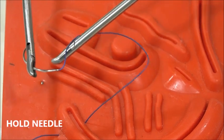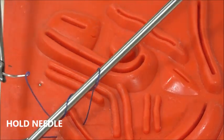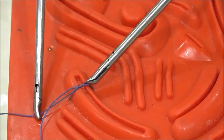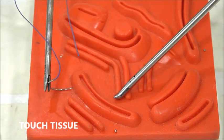Make two wraps of the thread over the left instrument, and the left instrument should catch the tail and should pull in the opposite direction parallel to the tissue. This is touch tissue.